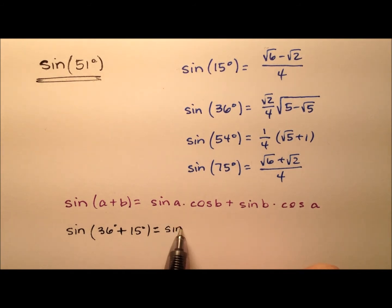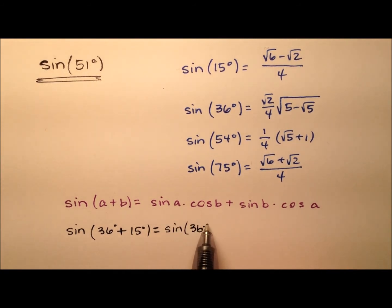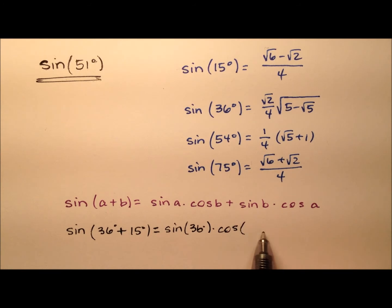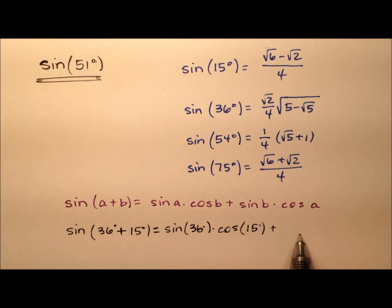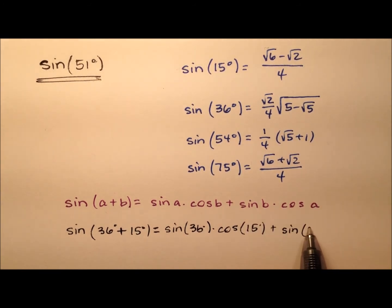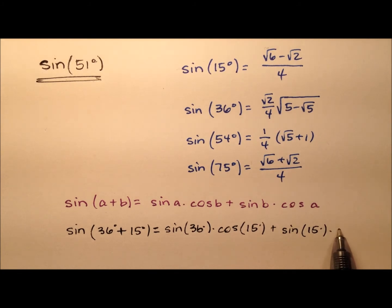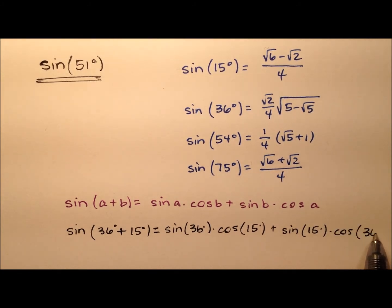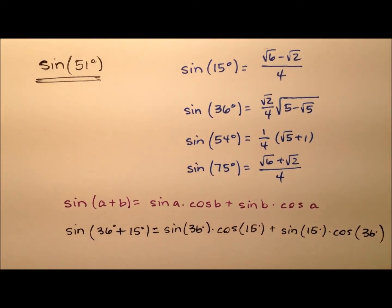So it looks like it will be the sine of 36 degrees times the cosine of 15 degrees, plus the sine of 15 degrees times the cosine of 36 degrees.